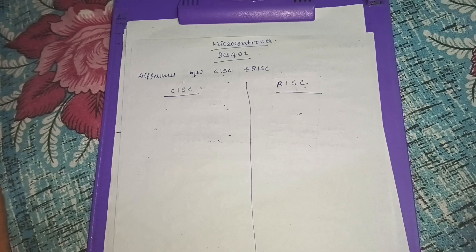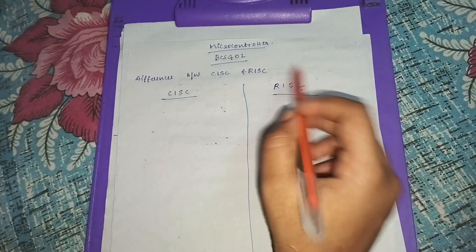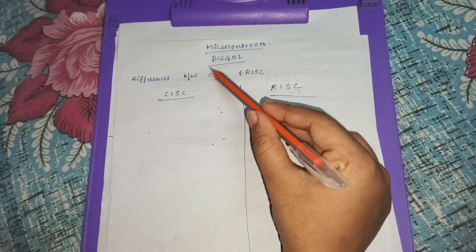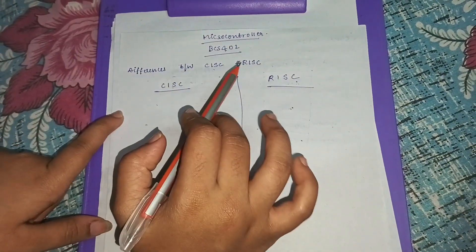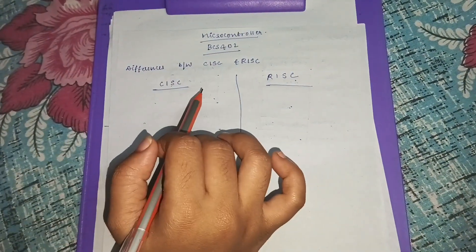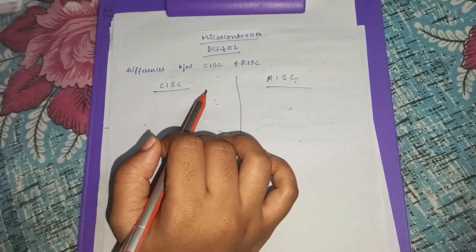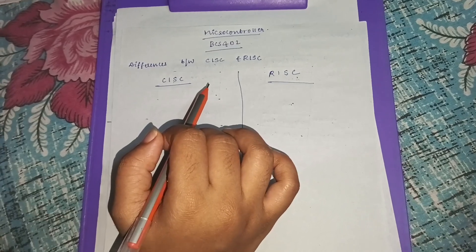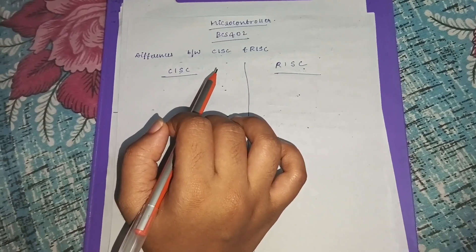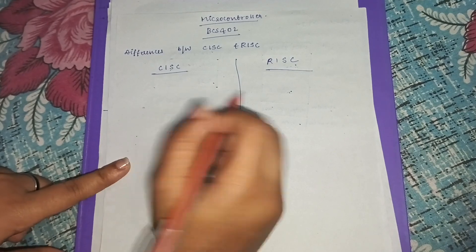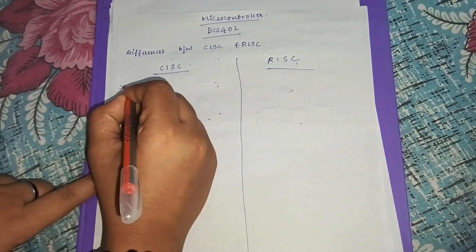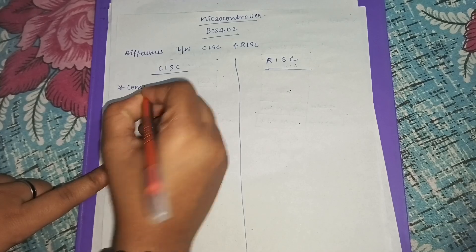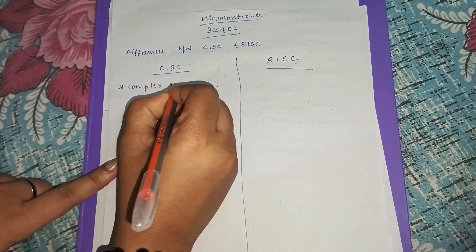In this video we will be covering microcontroller. The subject code is BCS402. In Module 1, they ask for the differences between CISC and RISC. The first comparison: CISC stands for Complex Instruction Set Computer — it has complex instructions.